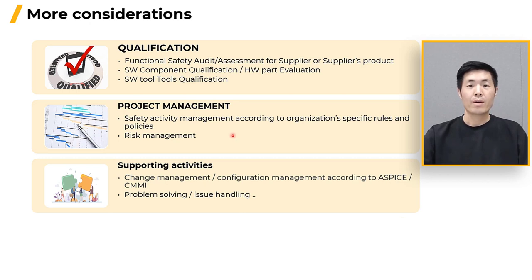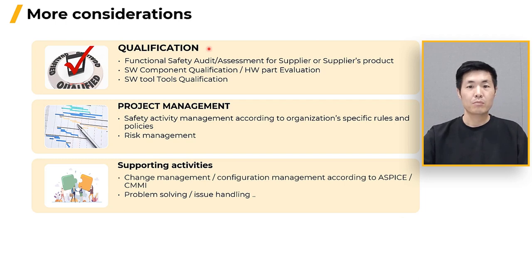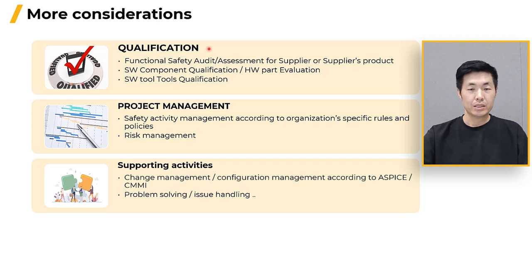Thus far, we have covered the key activities necessary for functional safety. However, there are a few additional activities worth considering. All resources utilized in the project must be safe and reliable. While safety design is crucial, managing the resources allocated to the project is equally important. Suppliers undergo a functional safety audit to ensure their qualification. It may also be necessary to verify the tools, software components, and hardware devices employed in the project.